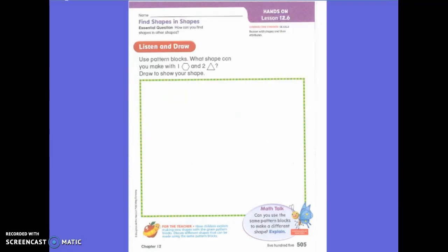Today we're going to use our pattern blocks to help us make new shapes. So if I make a new shape with one hexagon and two triangles, what new shape could I make?